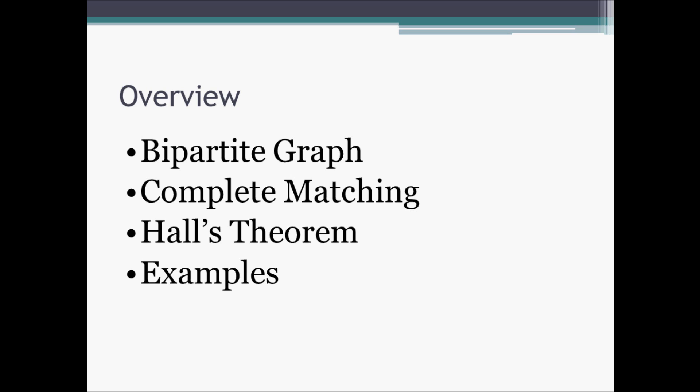To begin this presentation, we'll give you a brief overview of what we aim to cover. We'll start off with the concept of a bipartite graph. After learning what a bipartite graph is, we can move on to the concept of a complete matching. Both of these topics are essential for understanding Hall's Theorem, so after we've covered them, we can give an actual proof of Hall's Theorem, followed by some examples.